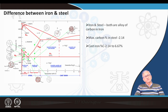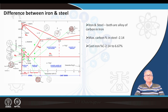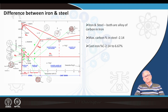If you keep increasing the carbon content, the carbon cannot be accommodated into the structure. It precipitates in the form of iron carbide — too much localized precipitation — or maybe in the form of graphite flakes, and it becomes cast iron. In the case of cast iron, since it is carbon-rich, it becomes brittle.